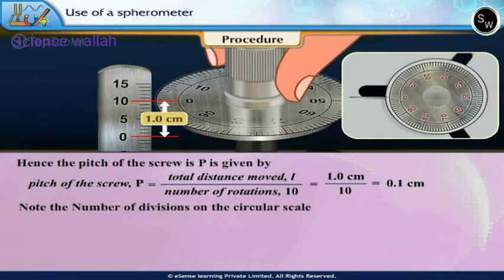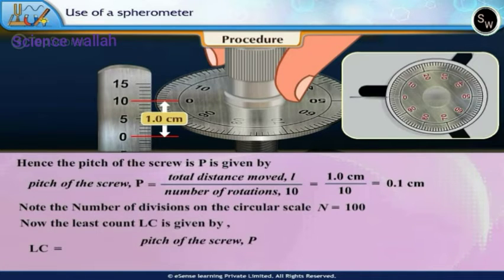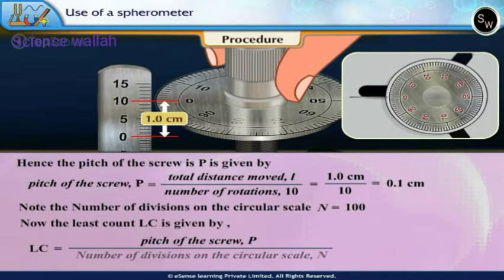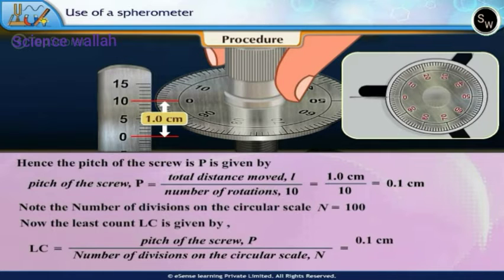Note the number of divisions on the circular scale N = 100. Now, the least count LC is given by LC = Pitch of the screw P / Number of divisions on the circular scale N = 0.1cm / 100 = 0.001cm.